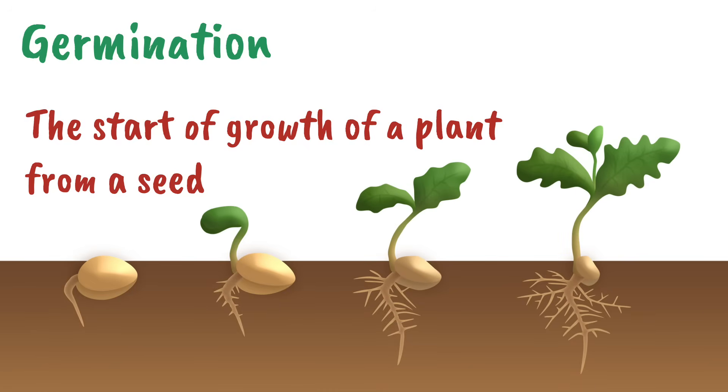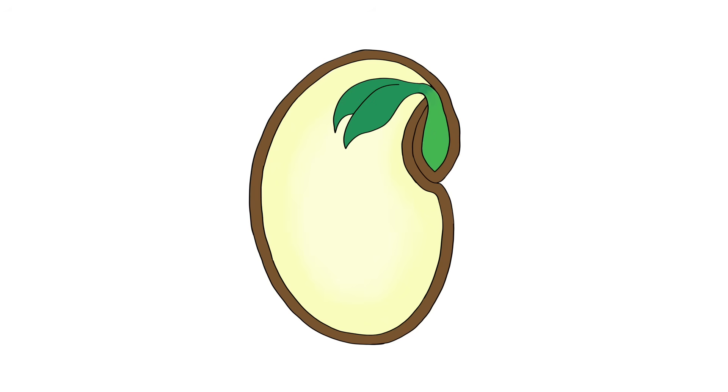Let's start by having a close look at the structure of a seed. Inside a seed is a plumule which will go on to become the first plant shoot and a radical which will form the first root.